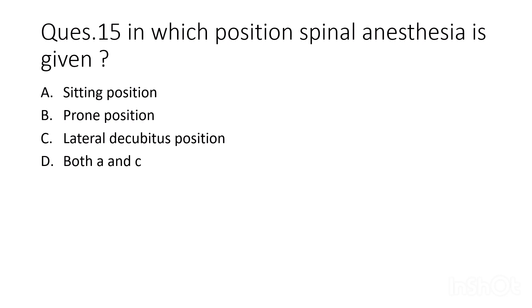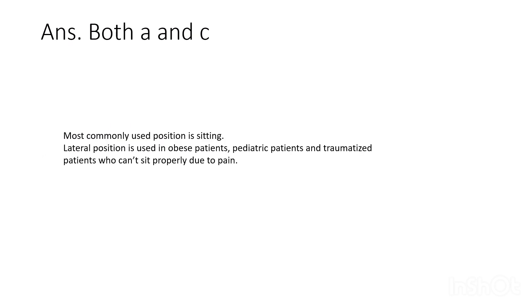Fourteenth question: in which position is spinal anesthesia given? Options are sitting position, prone position, lateral decubitus position, or both A and C. The correct answer is both A and C. The most commonly used position is sitting; the lateral position is used in obese patients, pediatric patients, and traumatized patients who cannot sit properly due to pain.